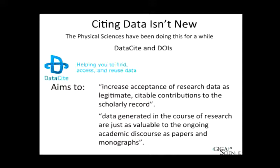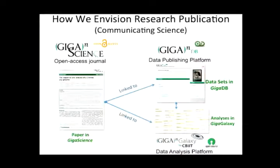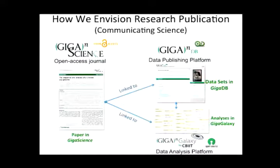Creating a way to cite data using DOIs is not new — the physical sciences have been doing this for a while using DataCite among other citation organizations. I want to highlight that not only are there numerous ways to give data DOIs, but also there are other ways beyond DOIs to cite data, such as URIs. DataCite had a specific focus on providing citation for datasets rather than for scholarly articles. We envision research publication at GigaScience as a way of communicating science as a whole. We do standard publication, but linked to that is our own database, and all the data associated with a paper are published and linked, given a DOI by DataCite, so the data itself can be cited.